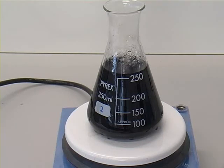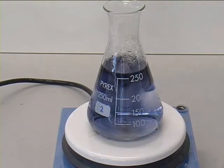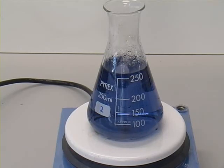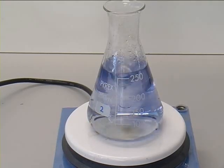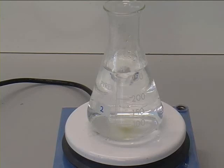Add 1 milliliter aliquots of thiosulfate to the flask until the blue color disappears. Record the total amount of thiosulfate that has been added throughout all the practicals to this solution.